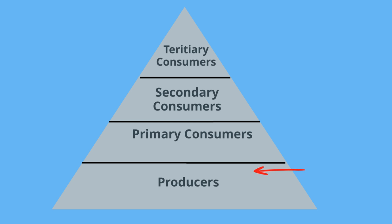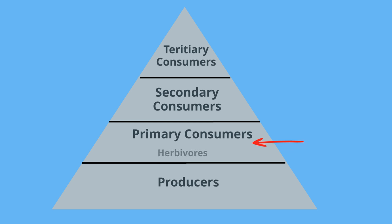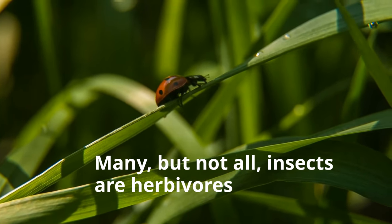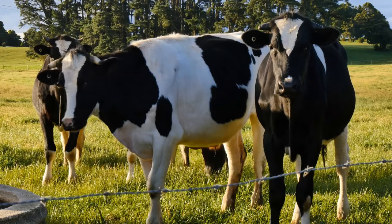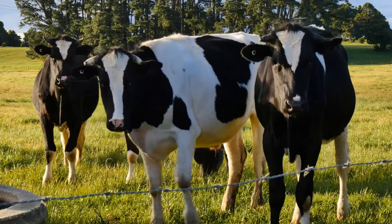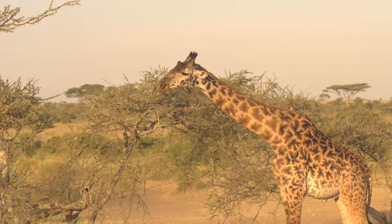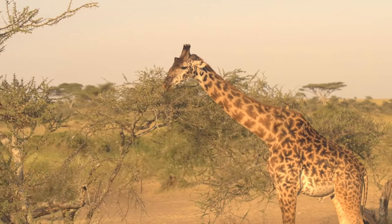The next layer includes primary consumers. These organisms are herbivores because they eat producers or plants. Examples are insects, cows, horses, and any other organisms that live exclusively on plants.